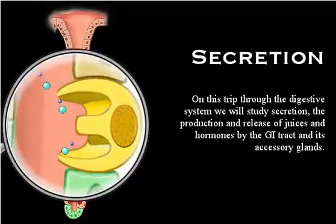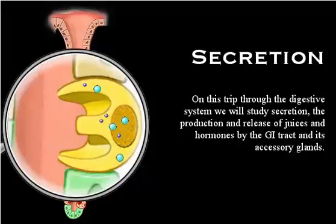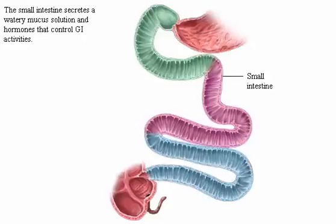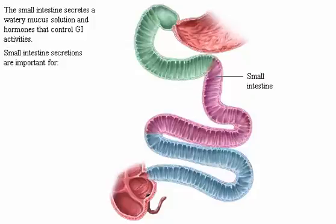On this trip through the digestive system, we will study secretion — the production and release of juices and hormones by the GI tract and its accessory glands. The small intestine secretes a watery mucus solution and hormones that control GI activities. Small intestine secretions are important for protection, digestion, and control.